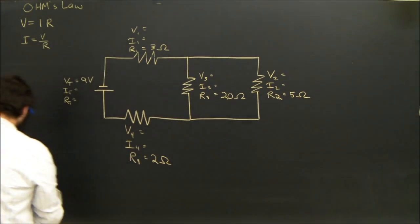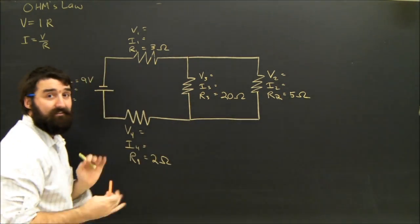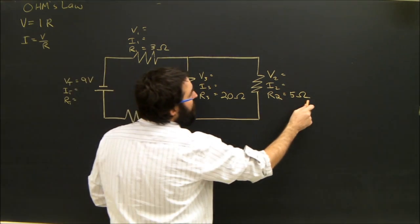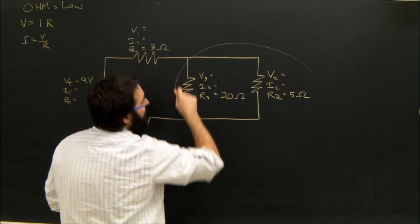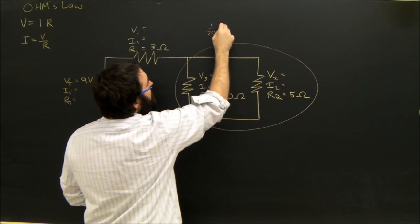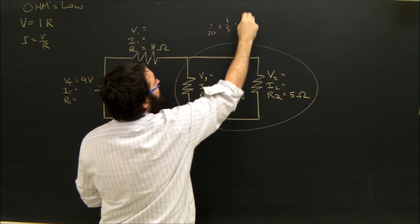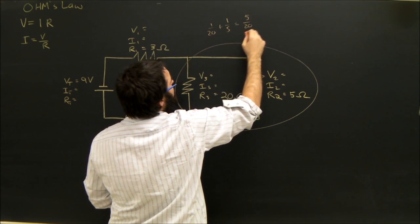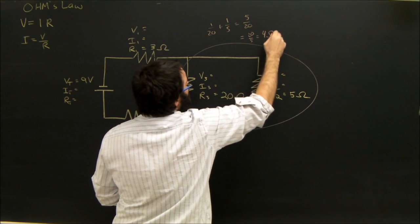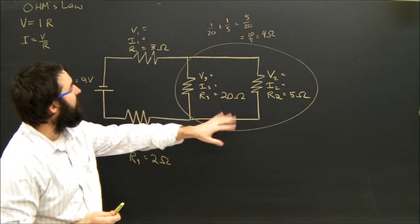Looking on this branch, we have 2 in parallel. Again, I'm starting here because these are the only 2 that are connected simply, in parallel. And looking here, we're going to find the total resistance of this branch of the circuit. And that's 1 over 20 plus 1 over 5 equals 5 over 20, but we've got to flip that over. 20 over 5, which equals 4 Ohms. So this thing has an equivalent of 4 Ohms. These 2 together.